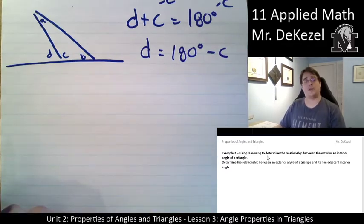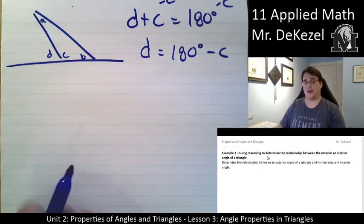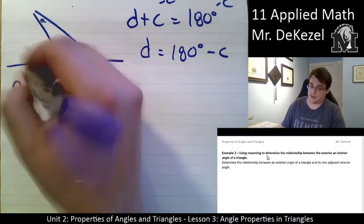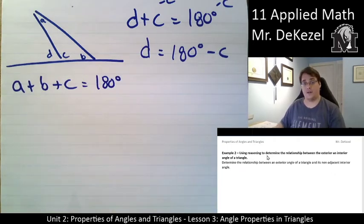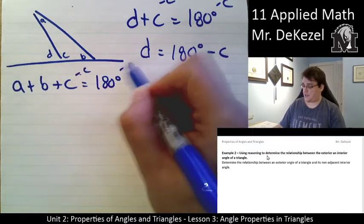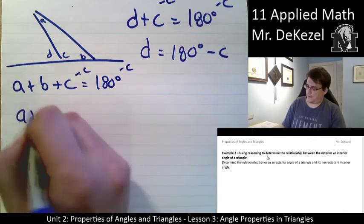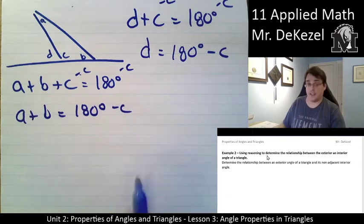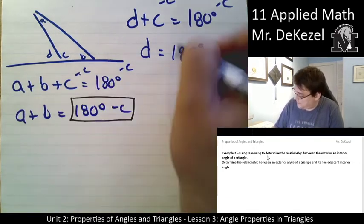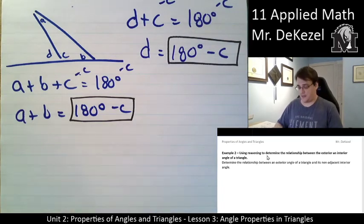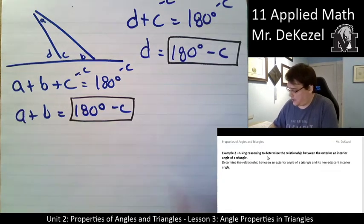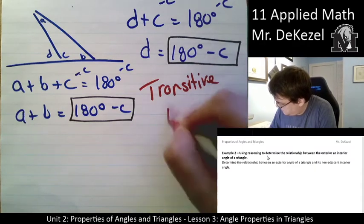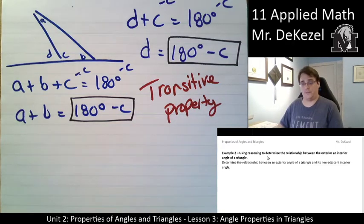Next thing I'm going to do is I'm going to use the other rule that I know, that A, B, and C added all together equal 180 degrees. A plus B plus C equals 180 degrees. All the interior angles added together. And what I'm going to do is I'm going to subtract C from both sides again. A plus B is equal to 180 degrees subtract C. I have two things that are the same. 180 degrees minus C is equal to D. 180 degrees minus C is equal to A plus B. So because I know that those two equal the same thing, they must equal each other. It is the transitive property.